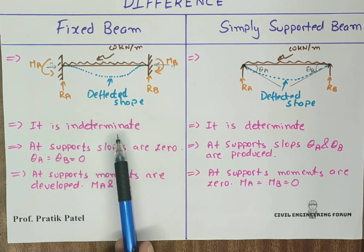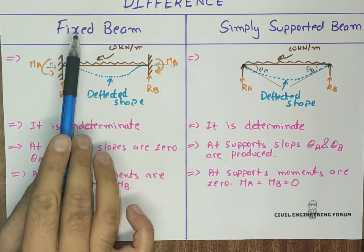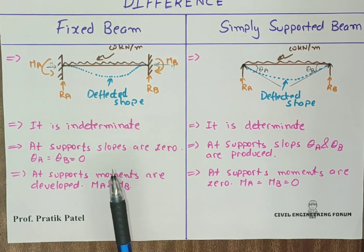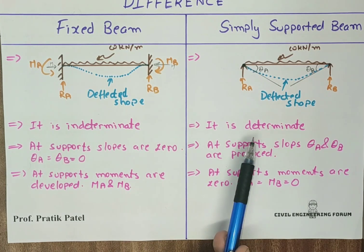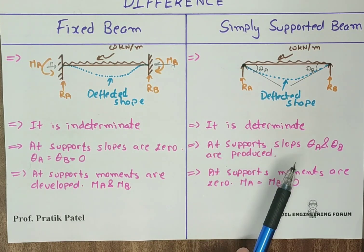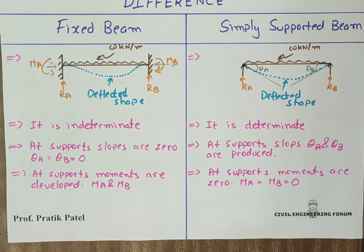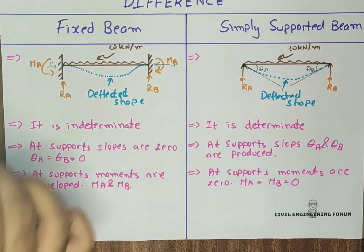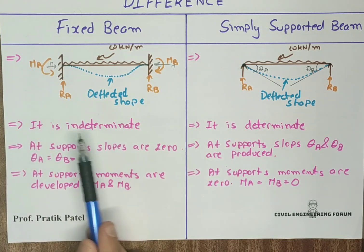The fixed beam is indeterminate, as we have seen in the first part of this lecture. The simply supported beam is determinate, as calculated in the last lecture. This chapter deals with fixed beam as an indeterminate structure.